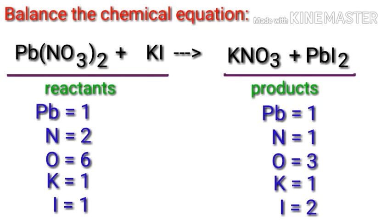The number of atoms is not balanced on both sides. To balance the chemical equation, we need to make use of coefficients. A coefficient is a number that we place in front of a chemical formula.